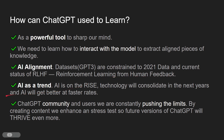AI is on the rise. Technology will consolidate in the coming years and artificial intelligence will improve at faster rates. The ChatGPT community and its users are constantly pushing limits by creating content that stress-tests future versions of ChatGPT. As a community, we get to know where the limits are in specific fields, and we can help future AI versions thrive by identifying those limits.